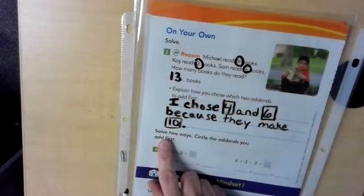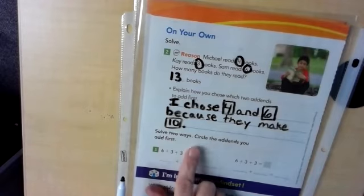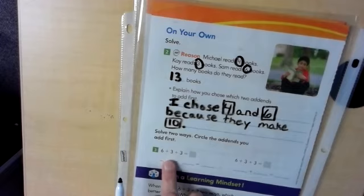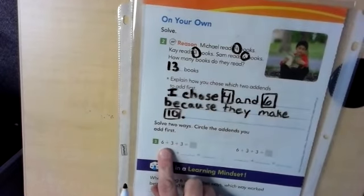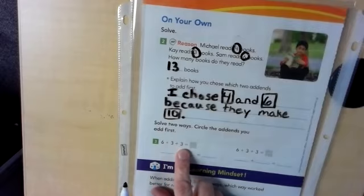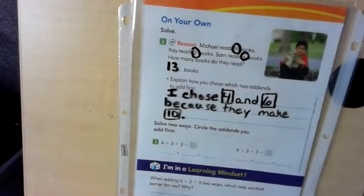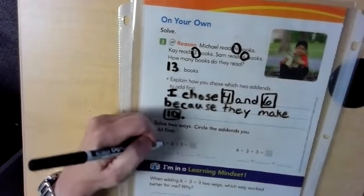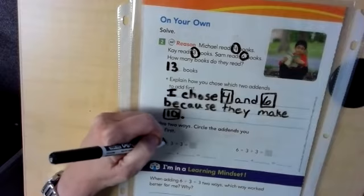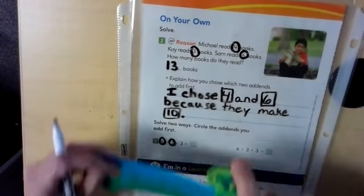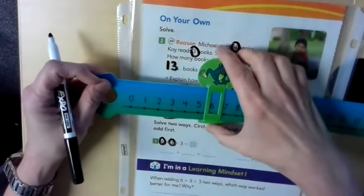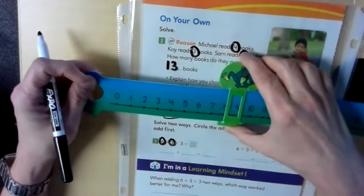All right, boys and girls. So now we're going to solve two ways. Circle the add-ins that you add first. So we notice on number three, we have the same problem. Six plus three plus three. We have it two times. So we're going to come up with two different answers or two different ways to solve that problem. First, let's go ahead and circle on number three. Let's circle our six and our three. We're going to put those two numbers together first. So this time we're going to use our number line to six. Hop forward three. One, two, three.